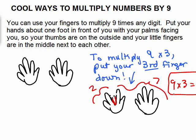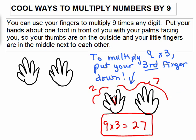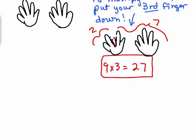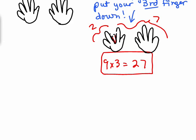So that's how you can use your fingers to do 9 times any single digit. Try this with your hands, put your hands out in front of you. And let's do 9 times 6.